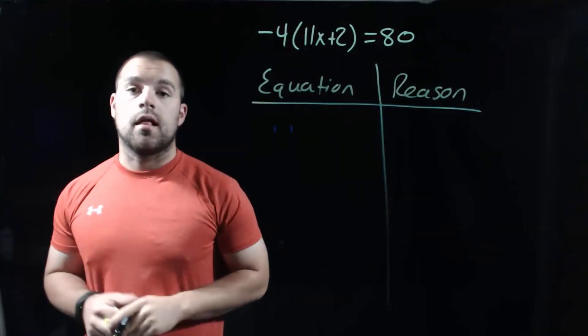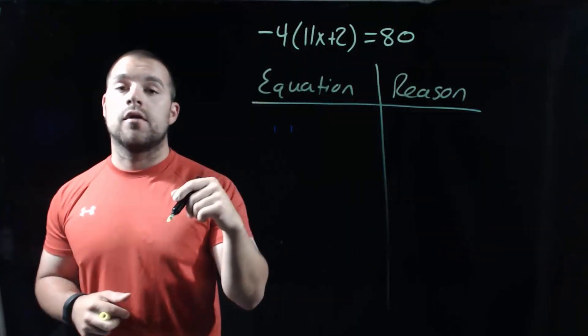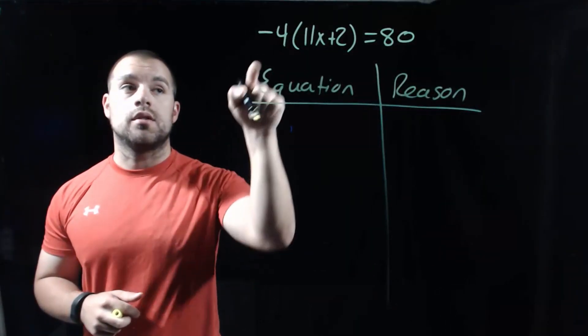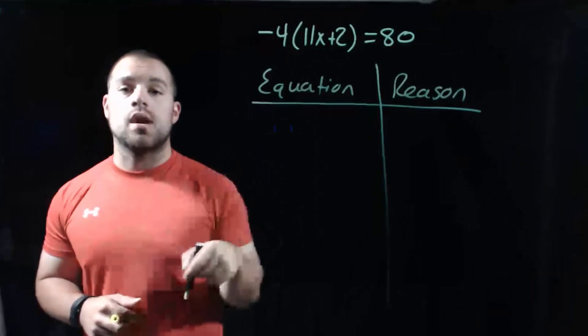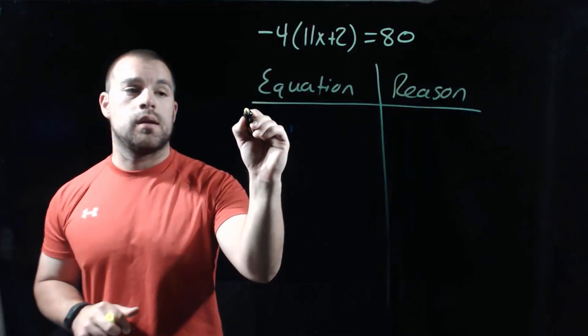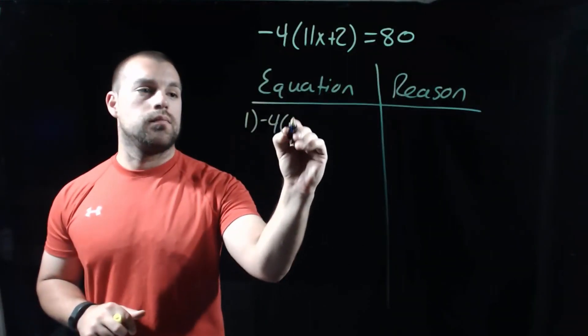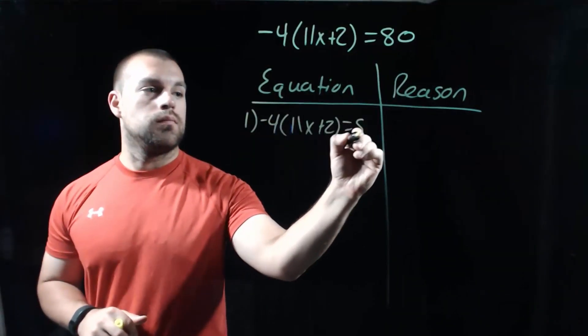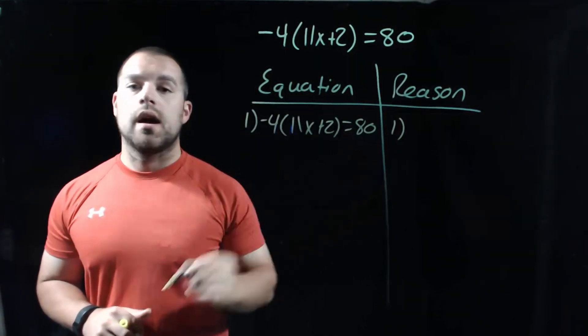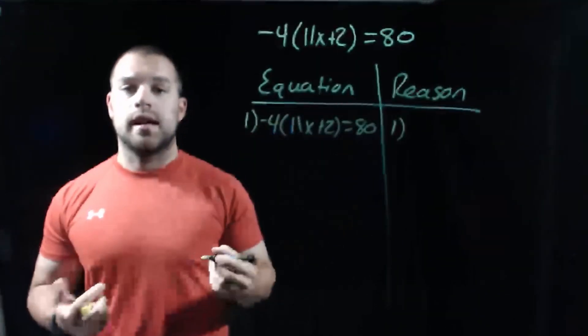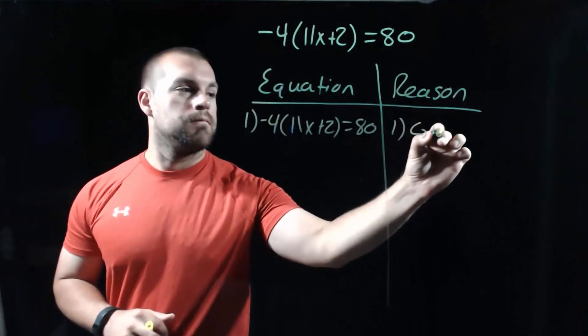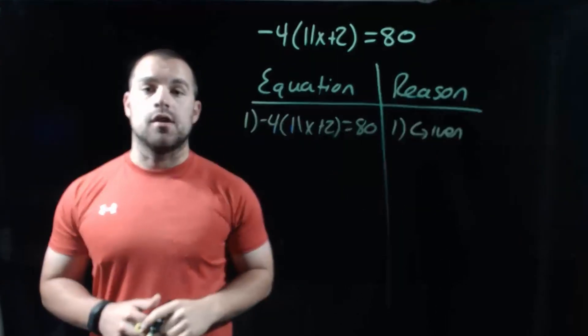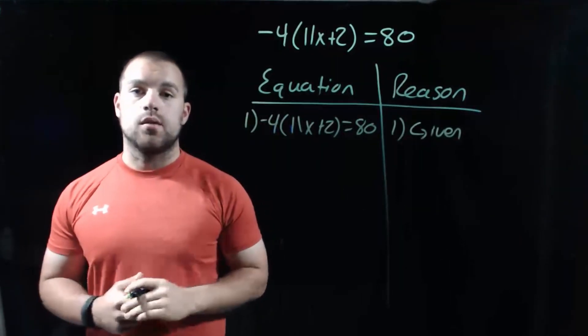Just like we did in the last example, our very first step is going to be to copy the equation down as it's written. And our reason is "given" because that's the equation as it was given to us.